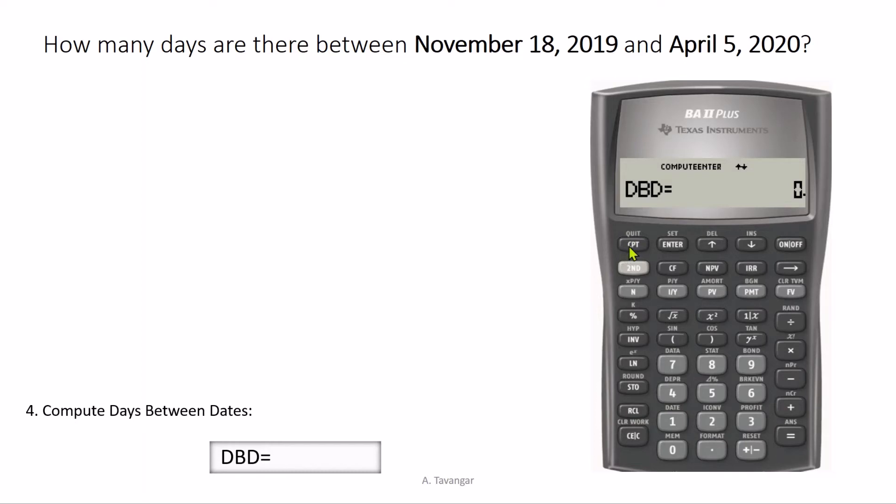CPT is the compute button. You press this and then it gives you the number of days. So between these two given dates, there are 139 days.